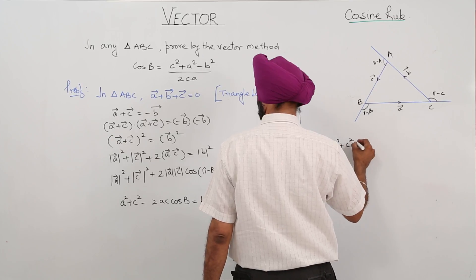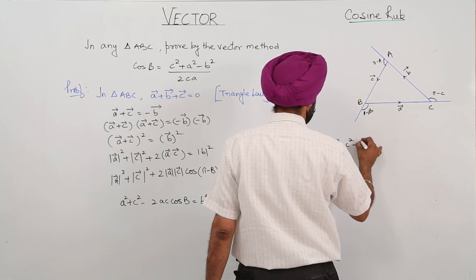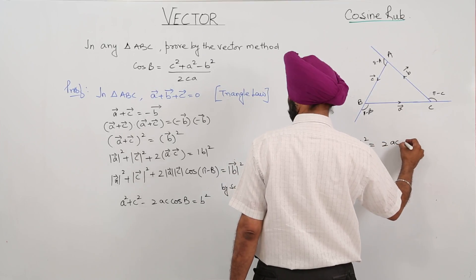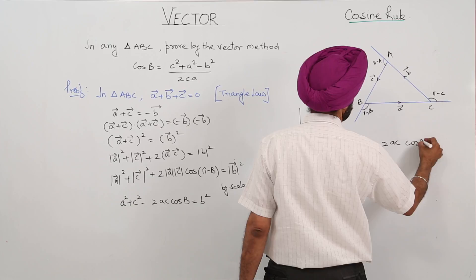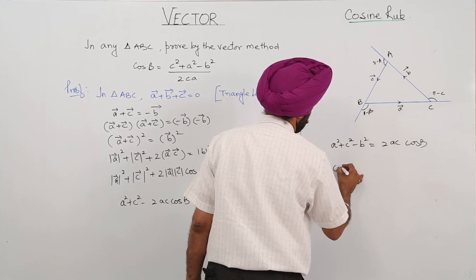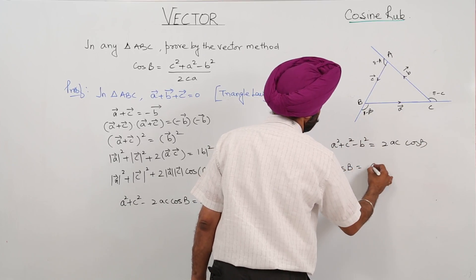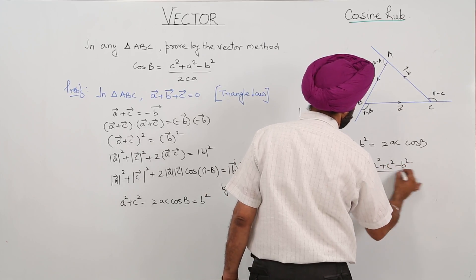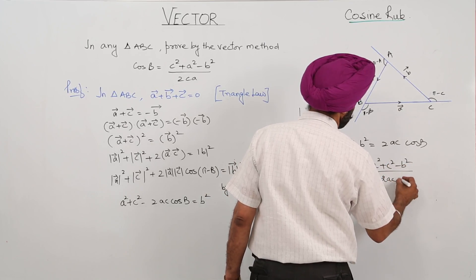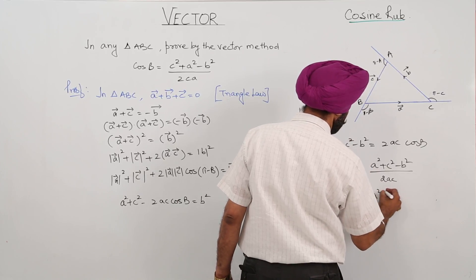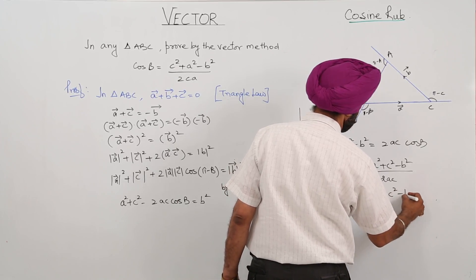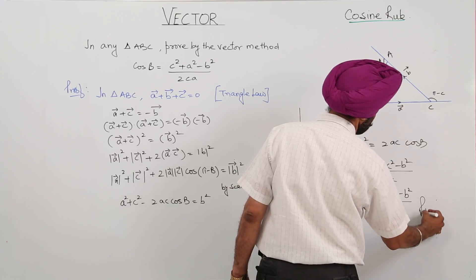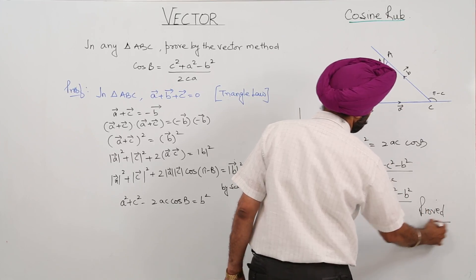Therefore, a squared plus c squared minus b squared equals 2ac cos B. So cos B equals a squared plus c squared minus b squared upon 2ac, or equivalently upon 2ca. Proved.